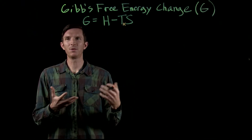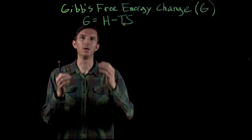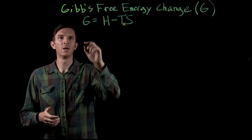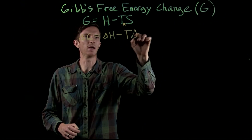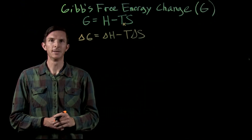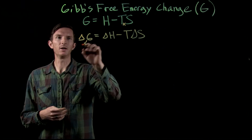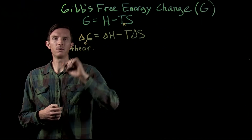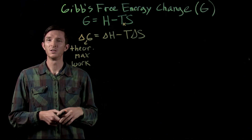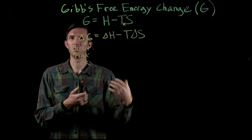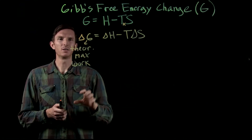The important thing with Gibbs free energy is talking about what happens to it as a reaction occurs. Just as we talk about the change in enthalpy and change in entropy, we now talk about the change in Gibbs free energy: ΔG = ΔH − TΔS. We call it free energy because the Gibbs free energy change represents the maximum theoretical work that a system can do — the energy available if we utilized all of it to do work.